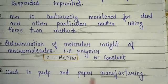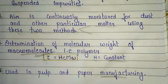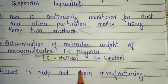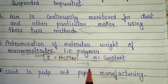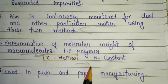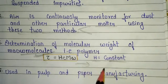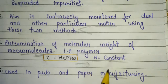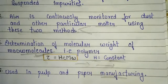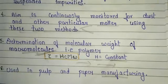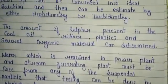The sixth important application is in pulp and paper manufacturing. Turbidometry and nephelometry are also used in pharmaceutical industries and petroleum refining. This phenomenon is also used in sewage works. These are the very important applications of turbidometry and nephelometry.